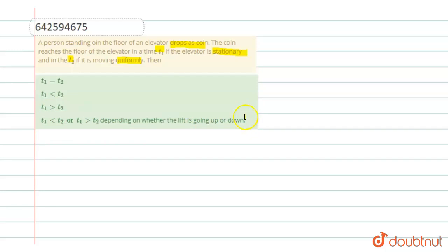It is a multiple choice question, so first of all draw a diagram to understand it. There are two elevators: one is stationary, and another one is moving.